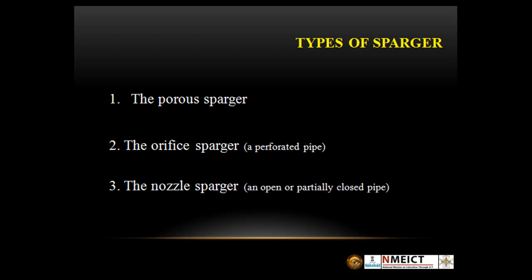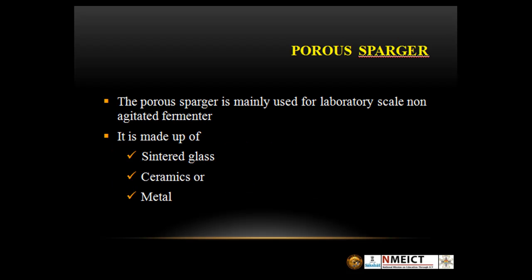There are three types of sparger: the porous, the orifice, and the nozzle sparger. The porous sparger is mainly used for laboratory scale non-agitated fermenters. It is made up of sintered glass, ceramics, or metals.